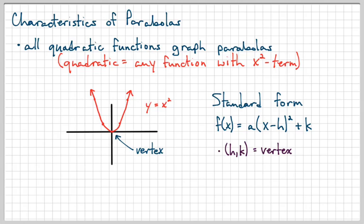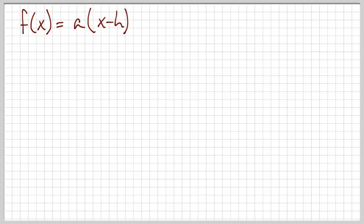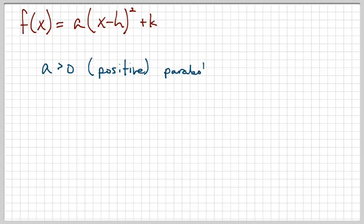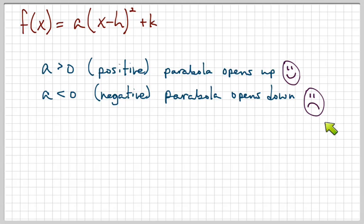The H and the K go together to make one point, and that point is the vertex. The A variable controls whether the parabola opens up or down. If A is positive — greater than zero — the parabola will open up. If A is negative — less than zero — the parabola will open down. The way we remember this is: positive people smile, so the parabola opens up; and negative people frown, so the parabola opens down.